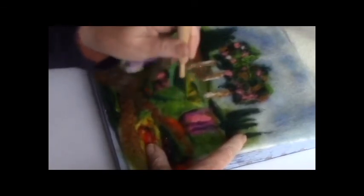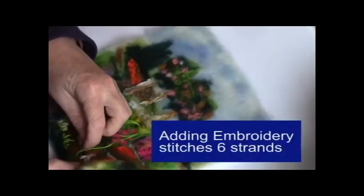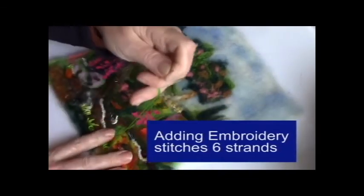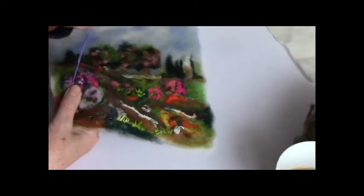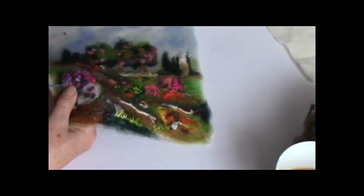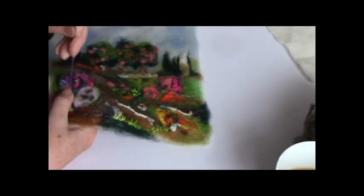Then you're going to start the embroidery. Take six strands of embroidery thread and put it in your needle. Proceed to add the embroidery threads in the colors matching the felt. Because the felt is so thick you need the six strands of embroidery thread.